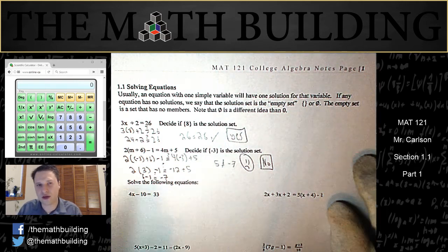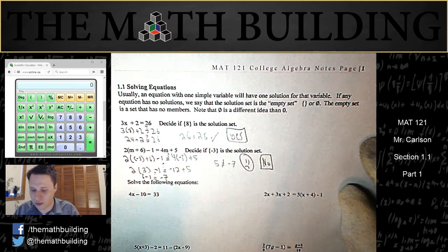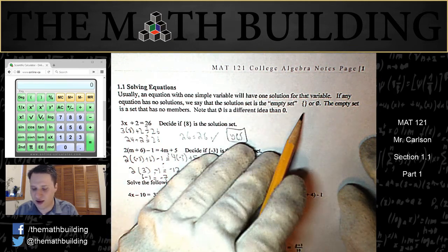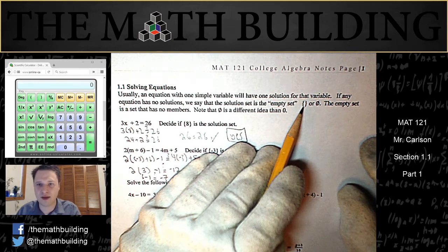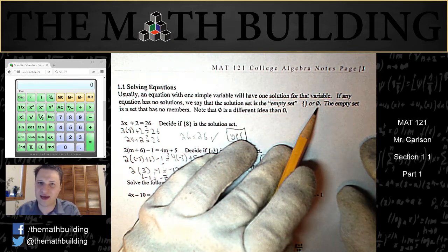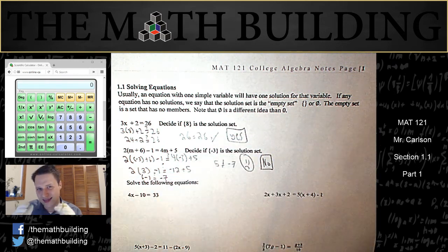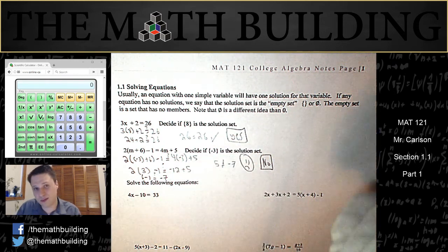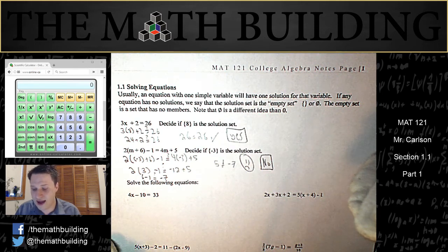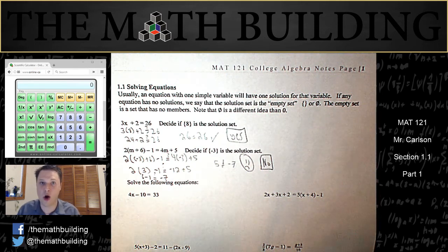A solution set is just a collection of things, and if there's nothing in the solution set, it's called the empty set, which we represent either with empty brackets or a zero with a slash through it. The empty set has a different meaning than zero, because zero could be a solution to an equation. An empty set is just a collection of no objects.